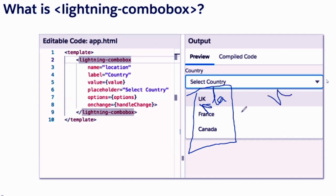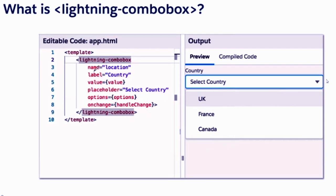So what is a combo box? A combo box is a collection of multiple options which will allow you to choose one from the available options. We have options with name and label — both are important. Label is what you see on screen. Name is how you identify this element in your JavaScript. If you click on, say, Canada, that becomes the value — that is the selected item, basically which item you selected from the available list.